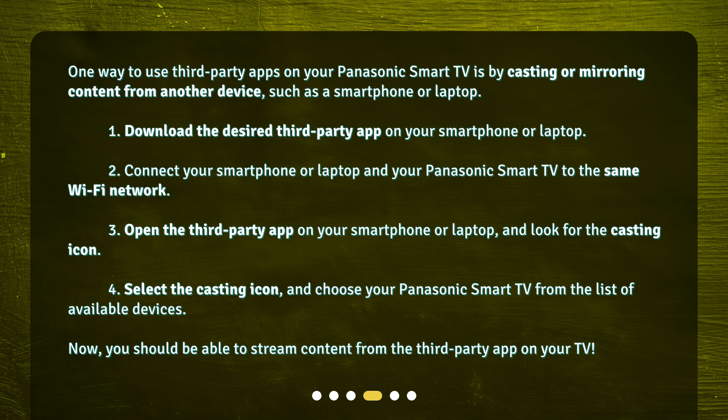How to use casting for third-party apps: One, download the desired third-party app on your smartphone or laptop. Two, connect your smartphone or laptop and your Panasonic Smart TV to the same Wi-Fi network. Three, open the third-party app on your smartphone or laptop and look for the casting icon. Four, select the casting icon.